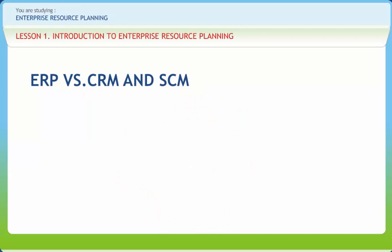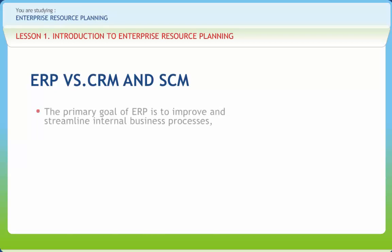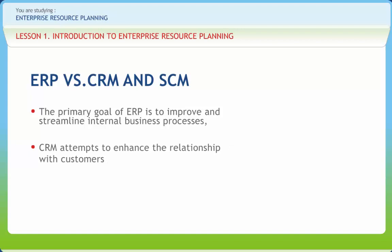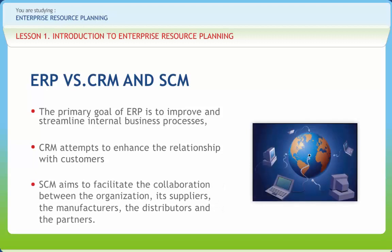CRM, Customer Relationship Management, and SCM, Supply Chain Management, are two other categories of enterprise software widely implemented in corporations and non-profit organizations. The primary goal of ERP is to improve and streamline internal business processes. CRM attempts to improve and streamline business processes related to customers, which typically requires re-engineering of current business processes. The components of an ERP system are the common components of a management information system.